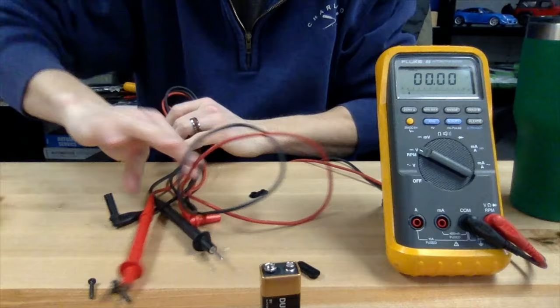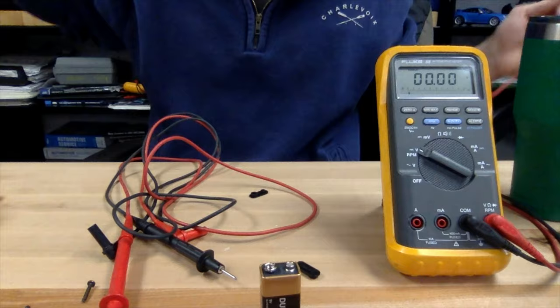Now we'll look at these test leads. We'll do a visual inspection. Sometimes I come across leads that have been caught in a fan or possibly melted due to heat, something like that.